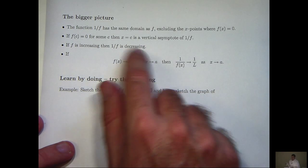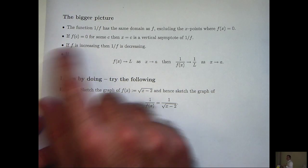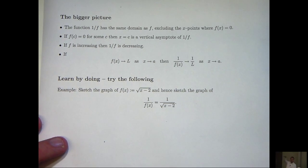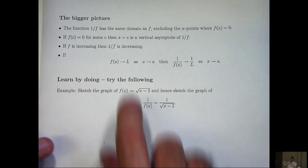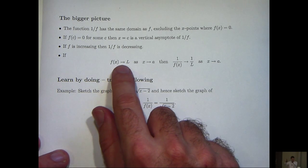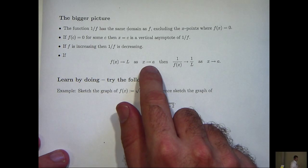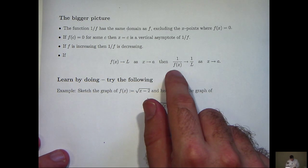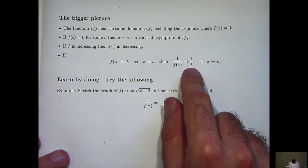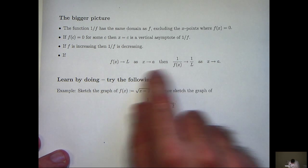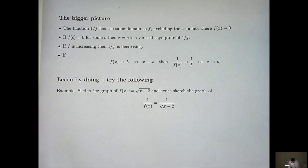If f is increasing, then 1 on f is decreasing. And if f is decreasing, then 1 on f is increasing. And finally, something about limits. If f of x approaches L as x approaches a, then the reciprocal function approaches the reciprocal limit as x approaches a.